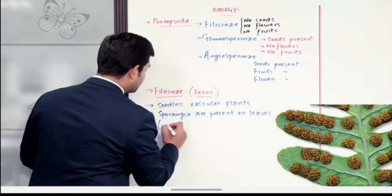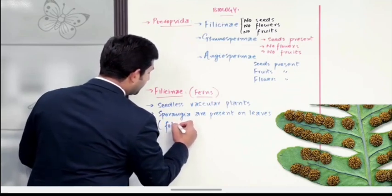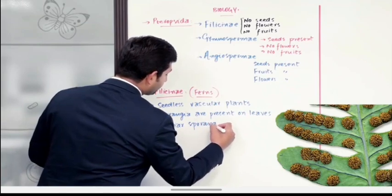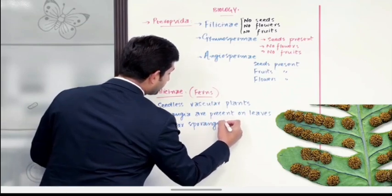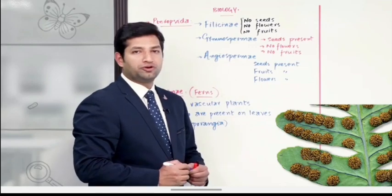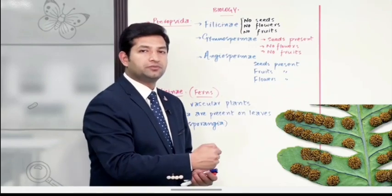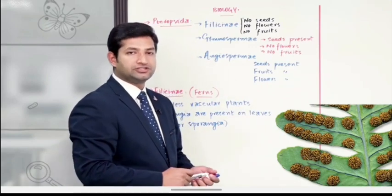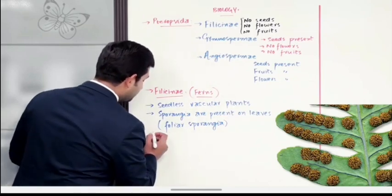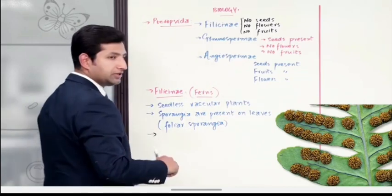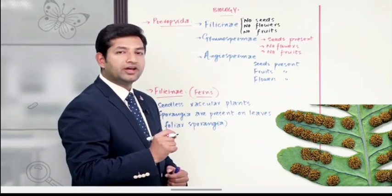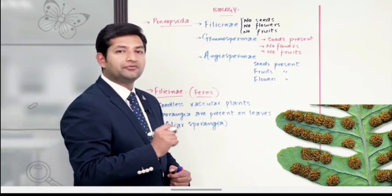जिसकी वजह से इनके लिए एक मख्सूस term यूज़ की जाती है, that is foliar sporangia - कि इनके जो spore producing structures हैं वो पत्तों के ऊपर मौजूद हैं, तो पत्तों की मुनासबत से हमने इनका नाम रख दिया foliar sporangia. फिर उसके बाद students, next property is an important short question आपके board के सवालات के लिहाज़ से।